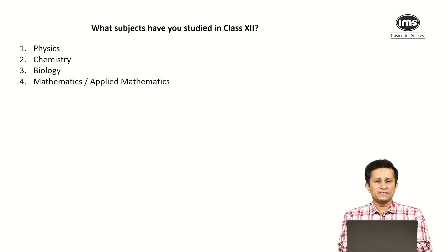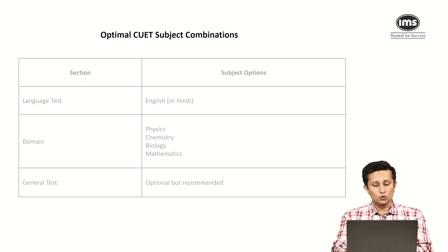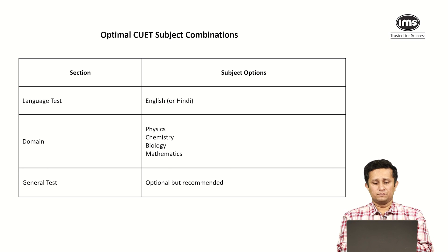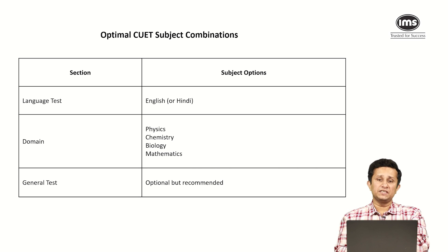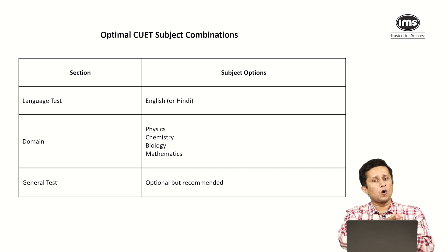Based on these two groupings we will have a look at the courses available to you in three categories. The most common subject combination that you should take would be English or Hindi as your language — you can select either based on your comfort. The domain subjects are more or less fixed: physics, chemistry, biology or mathematics, and then your general test, which I would strongly recommend because it opens up a lot of courses on the business side and on the journalism side as well.